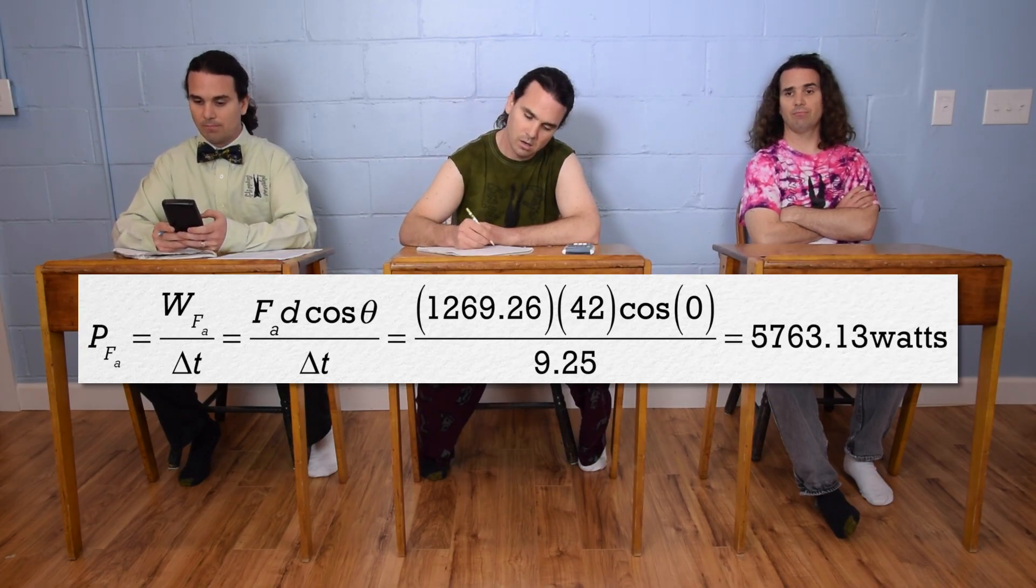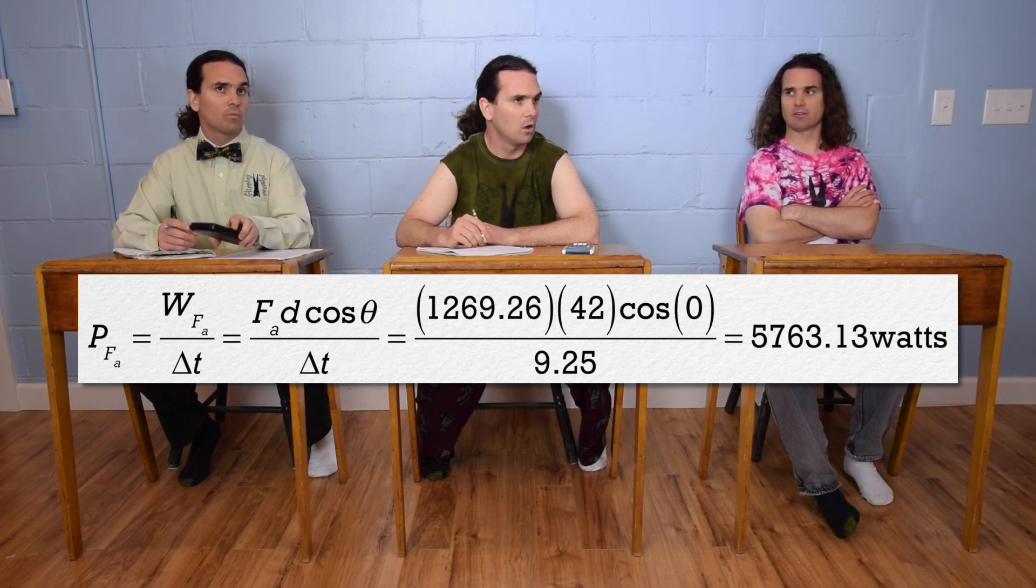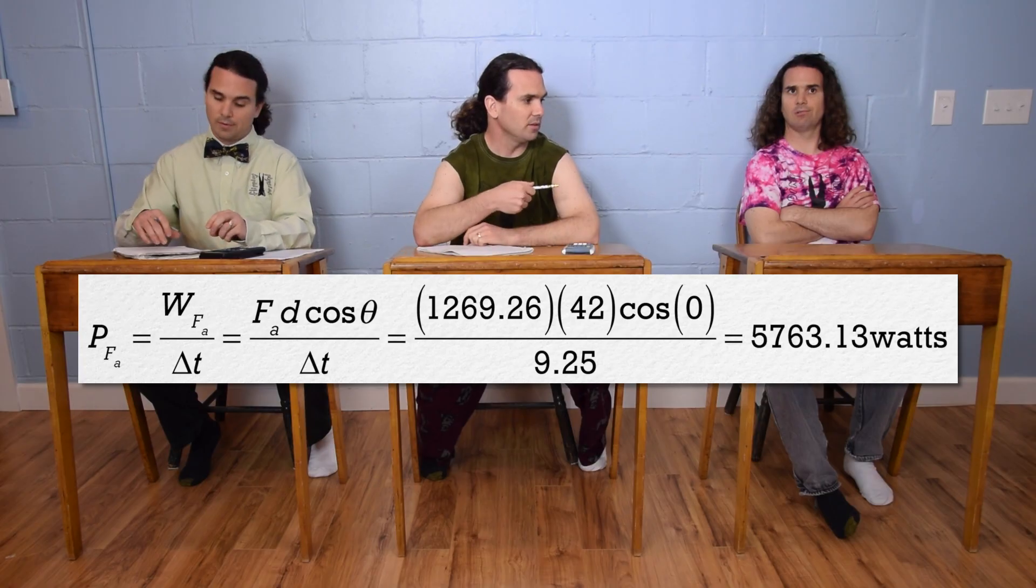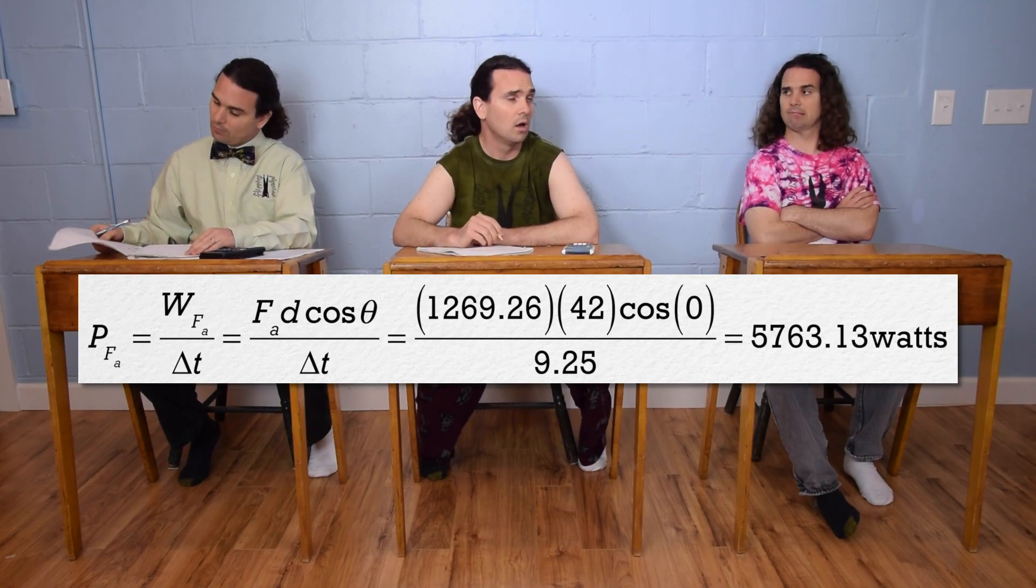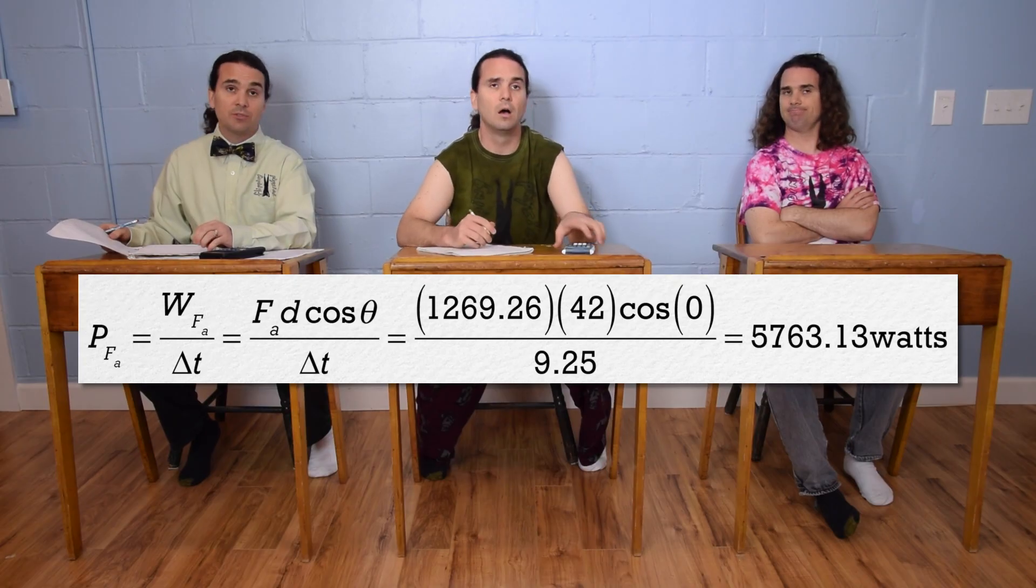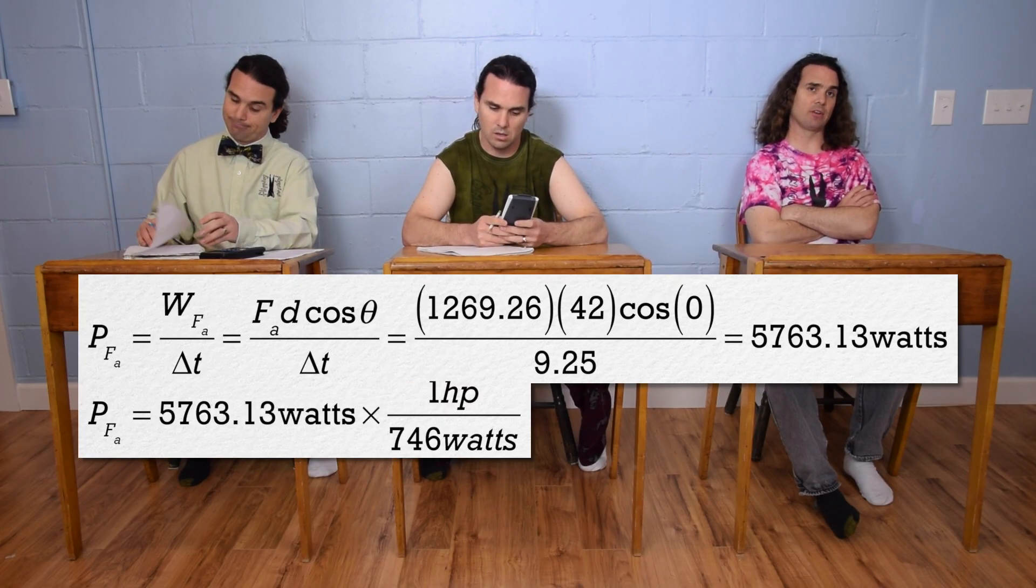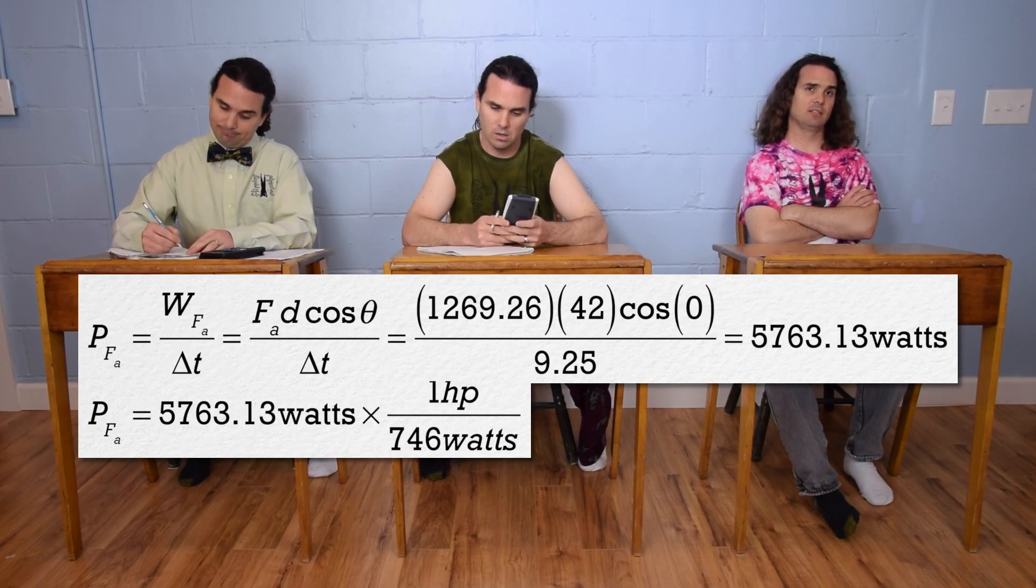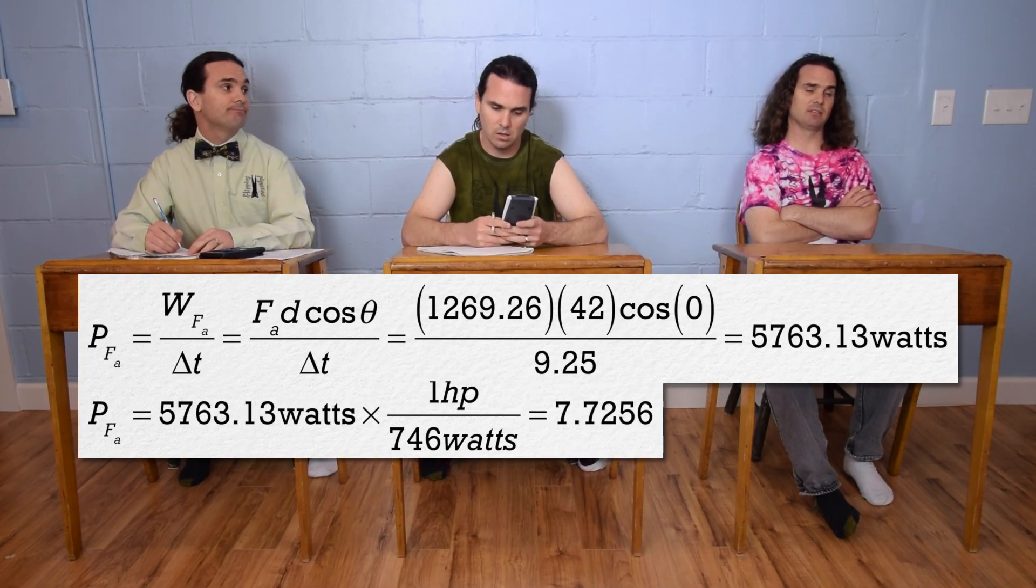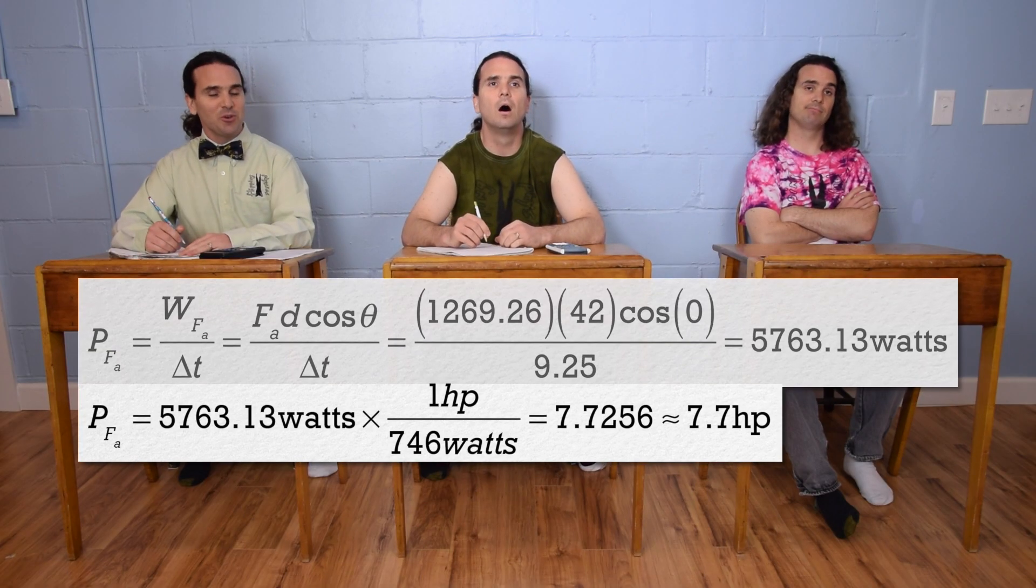And remember, I asked you to convert the answer to horsepower. I don't remember how many watts are in a horse. It's in your notes. 746 watts equals one horsepower. Multiply by one horsepower over 746 watts to get 7.7256, or 7.7 horsepower with two significant figures. Thanks, Billy. You are welcome.